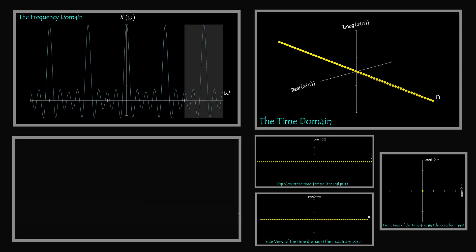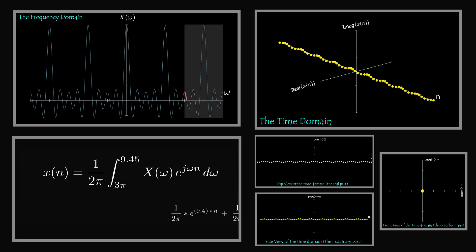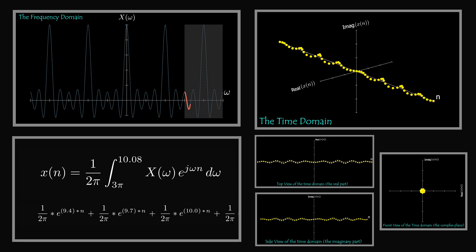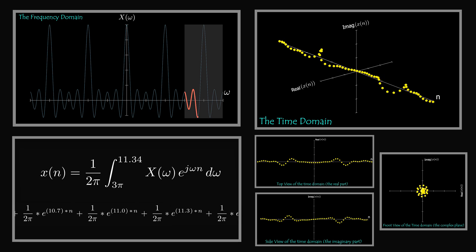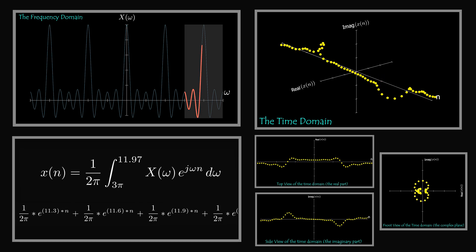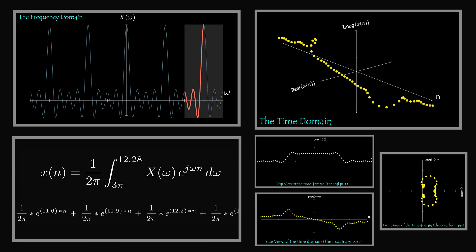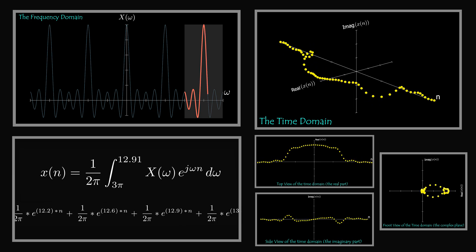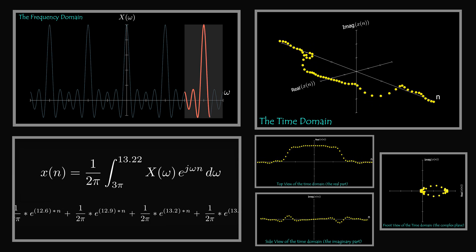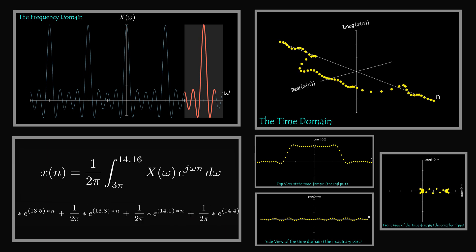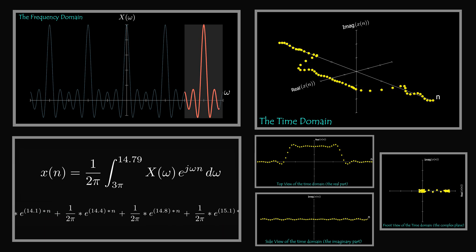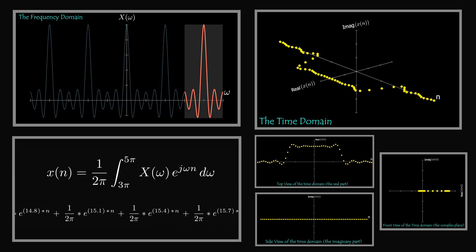In each 2π interval we have a sinc function, and the inverse Fourier transform of the sinc is the rectangular function. Since the sinc function here is periodic over a 2π period, the inverse Fourier transform of it is a discrete rectangular function. The rectangular function and the sinc function form a Fourier transform pair.